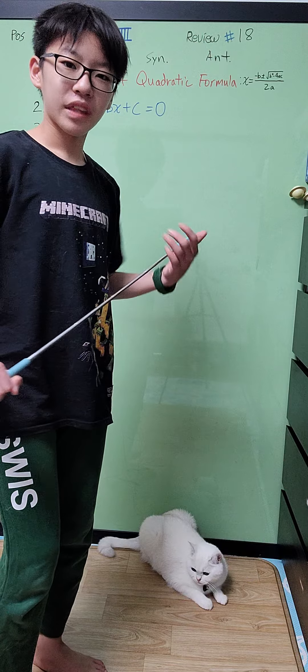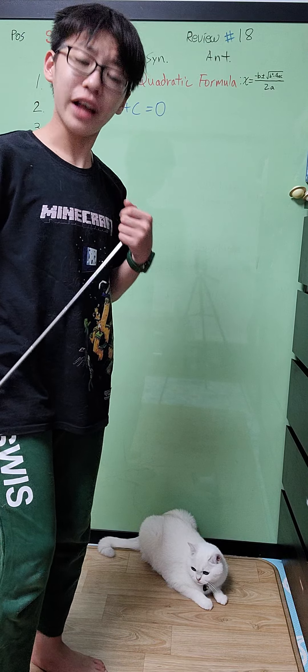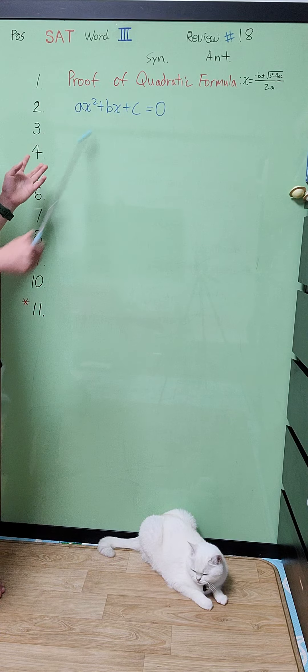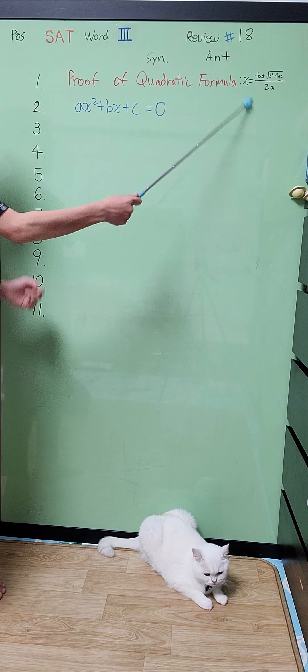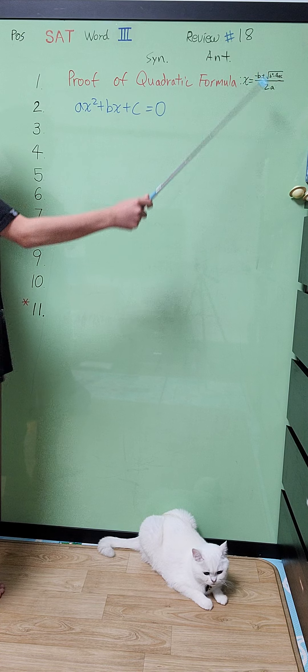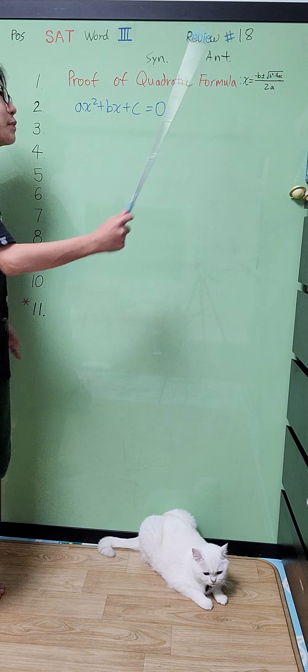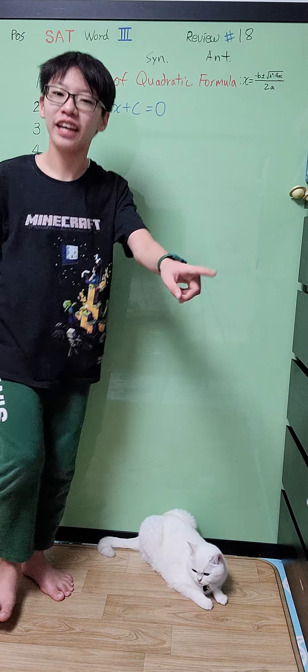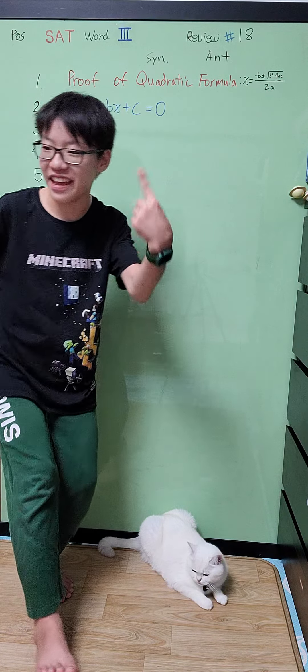Now here we are. As you remember from the last episode, we talked about the quadratic formula — basically this bunch of maths: x equals minus b plus or minus square root of b squared minus 4ac, all over 2a.